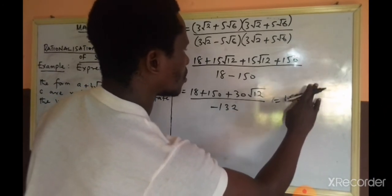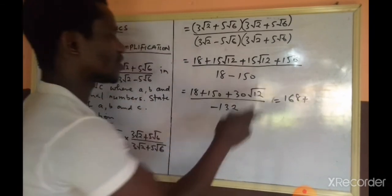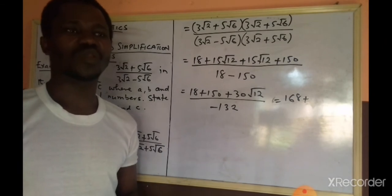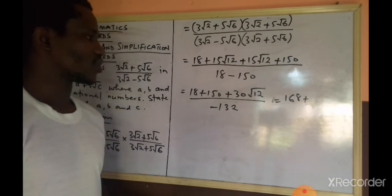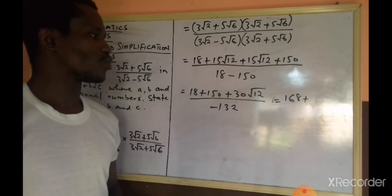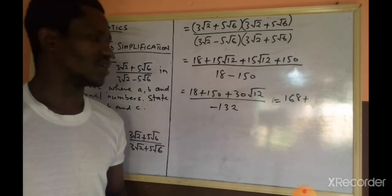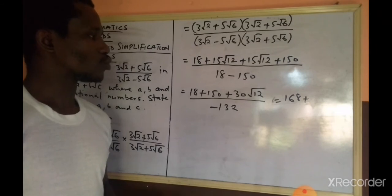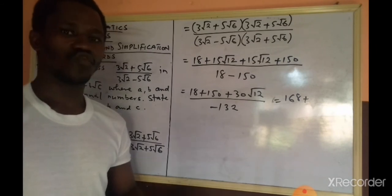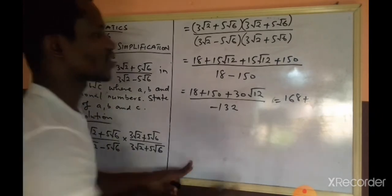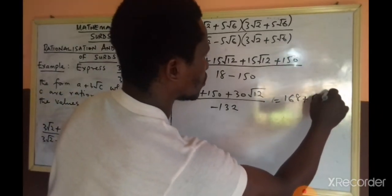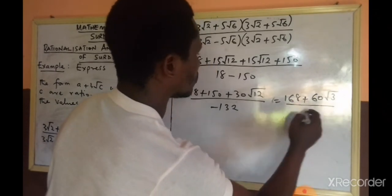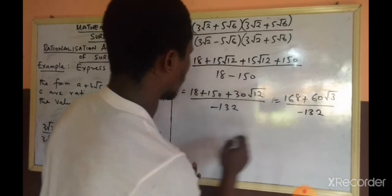There is a surd here as √12, which can further be simplified. √12 can be broken down, can be put into its basic form as 2√3. So if we multiply 2√3 by 30, we will be having 60√3, all over -132.